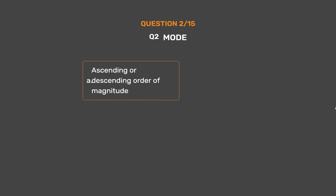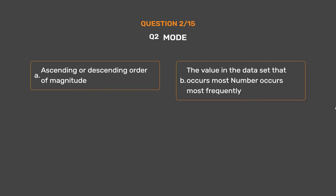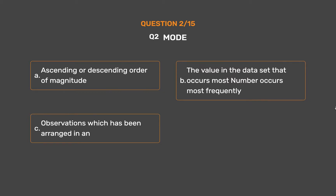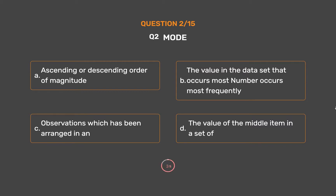Question number 2. Mode. Option A: Ascending or descending order of magnitude. Option B: The value in the data set that occurs most frequently. Option C: Observations which has been arranged in an ascending order. Option D: The value of the middle item in a set. The correct answer is Option B: The value in the data set that occurs most frequently.